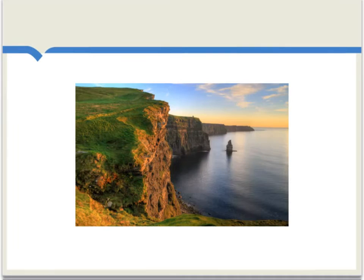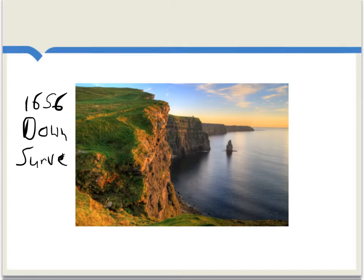In the 1650s, Petty was a supporter of Oliver Cromwell and he traveled with Cromwell's army in Ireland. He eventually received the charge to do the statistical charting of Ireland, finishing in 1656. This was called the Down Survey, and it was a quite extensive statistical survey of how many people lived in Ireland and what kind of economic activities they were engaged in.